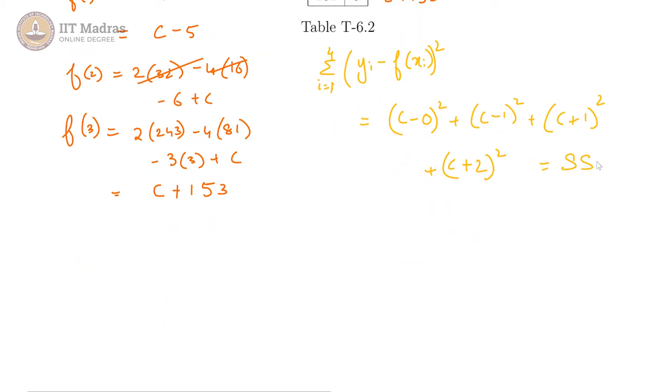This is the sum squared error, and we get c square plus c plus 1 minus 2c plus c square plus 1 plus 2c plus c square plus 4 plus 4c. This minus 2c and this plus 2c cancels off and we arrive at 4c square plus 4c plus 5.